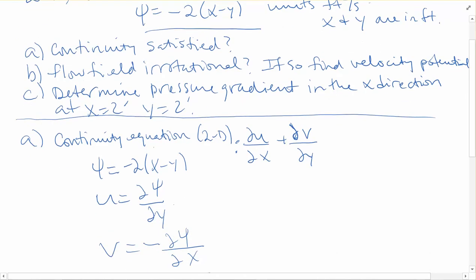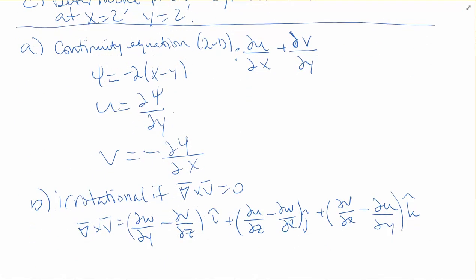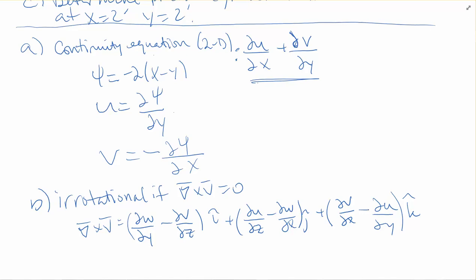Let's start on part A — that's the one about continuity. I've written down the 2D version of the continuity equation. We need the partial of u with respect to x, plus the partial of v with respect to y. For continuity to be satisfied, this equation needs to equal 0. Since all we're given is the stream function, we need to figure out what u and v are.